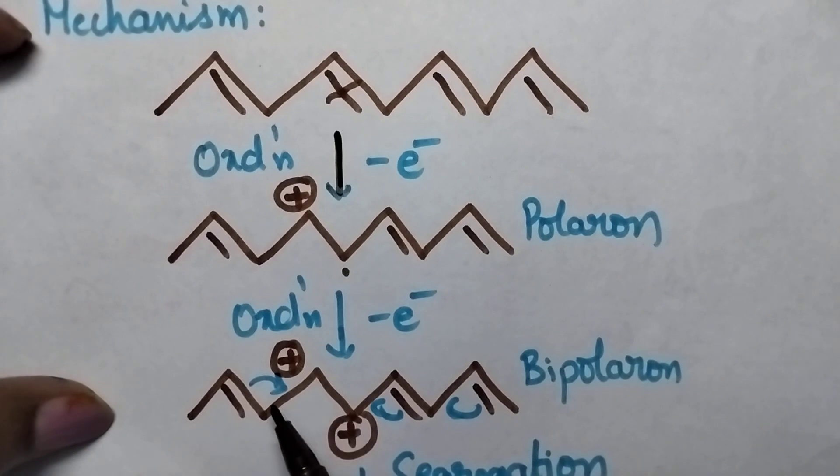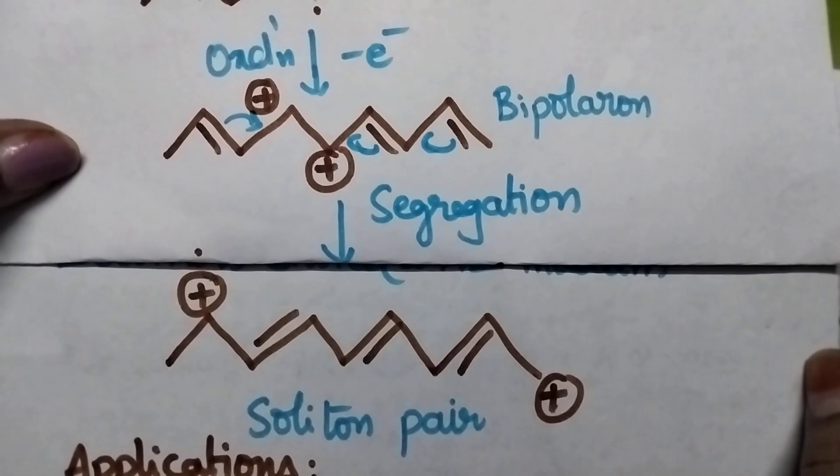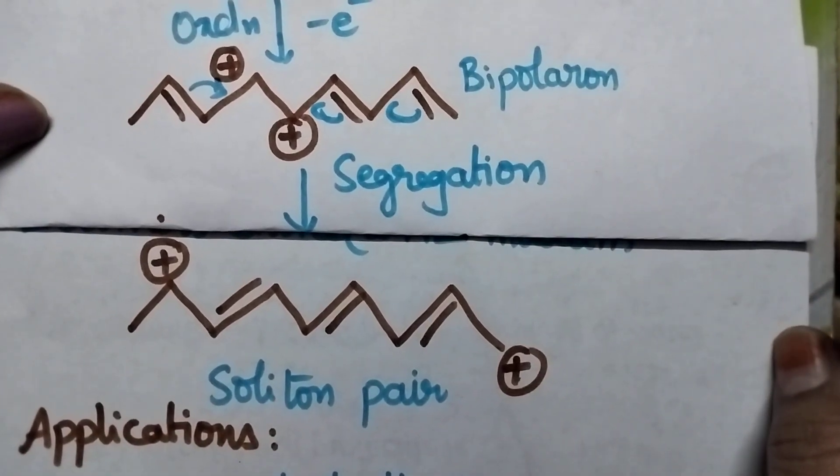With the result, there will be a change in the position of double bonds. Let us see after segregation what is the structure of the soliton pair.